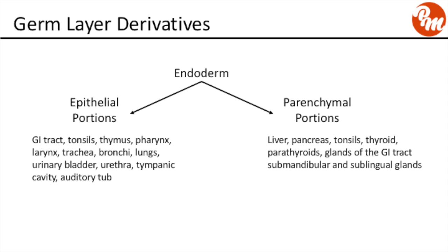Finally, the endoderm can be divided into epithelial portions and parenchymal portions. Under the epithelial portions of the endoderm, the derivatives include the GI tract, the tonsils, the thymus, the pharynx, the larynx, the trachea, bronchi, lungs, urinary bladder, urethra, tympanic cavity, and auditory tube.